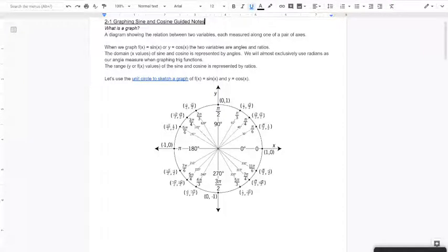All right, let's talk about how to graph sine and cosine. So first, what is a graph? A graph is just a diagram that shows the relationship between two variables, each measured along one pair of axes, right? So the x-axis and the y-axis.